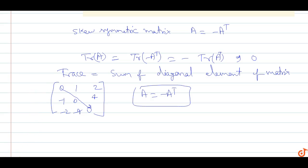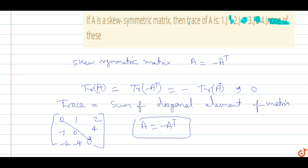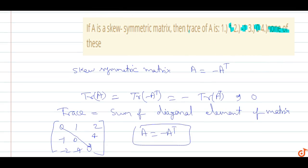So the trace is zero in a skew-symmetric matrix. Which option will be correct? Option C will be correct: zero. The trace is zero.